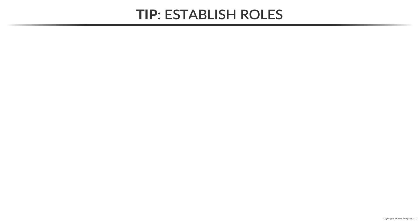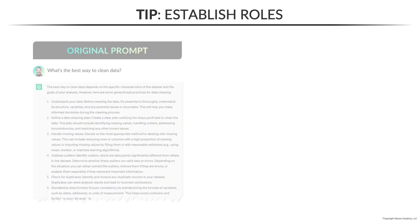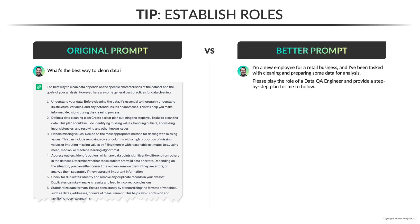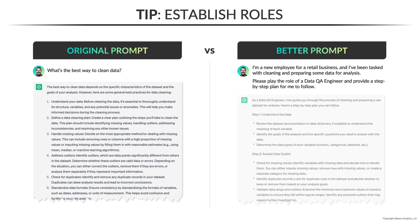Suppose you work for a retailer and just got your hands on some dirty data. You don't have a ton of experience managing or analyzing data, so you're hoping to get some guidance on how to approach the QA process. You could simply prompt ChatGPT with something like 'what's the best way to clean data?' Or you might use this as a chance to establish roles and write a prompt like: 'I'm a new employee for a retail business. I've been tasked with cleaning and preparing some data for analysis. Please play the role of a data QA engineer and provide a step-by-step plan for me to follow.' Again, we get similar information back, but now it's structured in a way that a data QA engineer might actually break it down.